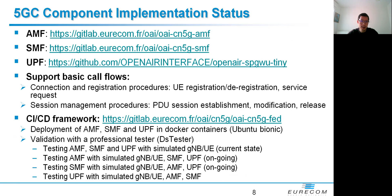So, what is the status of OAI Core Network 5G components? Today we have a viable 5G Core Network consisting of three main components: AMF, SMF, and UPF. Our core supports some basic core flows for connection and registration, including UE registration, deregistration, and service requests, and for session management procedures such as PDU session integration, establishment, modification, and release. This means that the UE can be attached to our core network and exchange IP traffic with a data network, as we will see in the demo in the next few minutes.